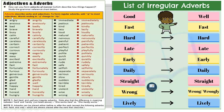Now I want to explain the difference between regular adverbs and irregular adverbs. Regular adverbs end with -ly or -ily. For example: the adjective 'angry' becomes 'angrily', 'excited' becomes 'excitedly', and 'slow' becomes 'slowly'. So regular adverbs end with -ly or -ily.